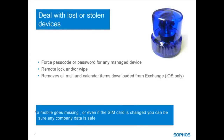So we've given people the ability to read their work email from their mobile, which is great, but you can't expect them to keep the phone safe. That's why mobile control makes sure that even if a mobile goes missing, the data is secure. You can force the user to have a password or passcode for that device. It's also possible to lock and wipe that mobile, ensuring any corporate data doesn't fall into the wrong hands.